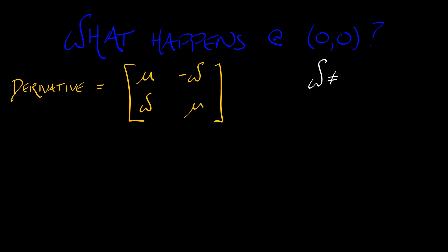So what happens there? Well, let's do what we do. We've already linearized this function so that we can see the derivative at the origin is the matrix mu, omega, minus omega, mu. Now, recall that omega is non-zero. That's good. That means that the eigenvalues for this matrix are mu plus or minus i omega. We definitely have a complex conjugate pair of eigenvalues.